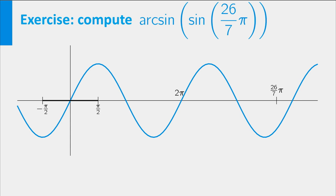You just saw this domain as the interval from minus pi over 2 to pi over 2. From the graph of the sine, you can see at what depth the sine of 26 pi over 7 is found. Let's see for which angle in the domain of the arcsine the same value is attained. Here it is.